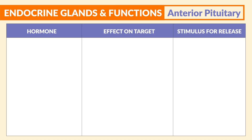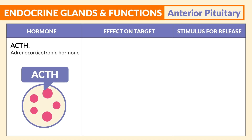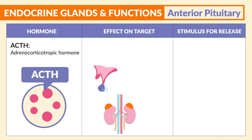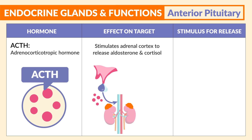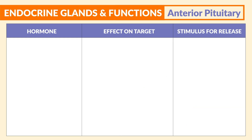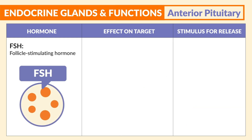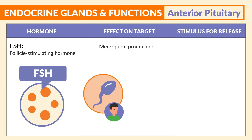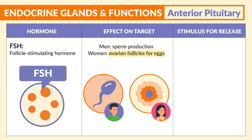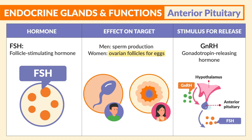Starting with ACTH, the adrenocorticotropic hormone — it stimulates the adrenal cortex to release aldosterone and cortisol, and the stimulus for release is stress. Next is FSH, the follicle stimulating hormone. In men, the effect is sperm production; for women, ovarian follicles for the release of eggs. The stimulus for release is GNRH, the gonadotropic releasing hormone.